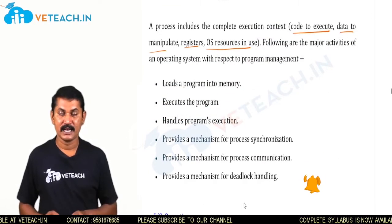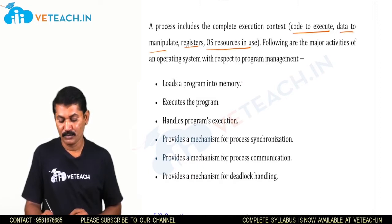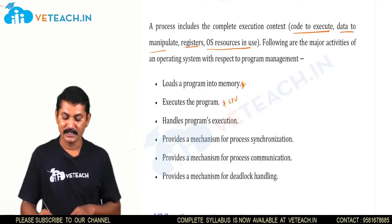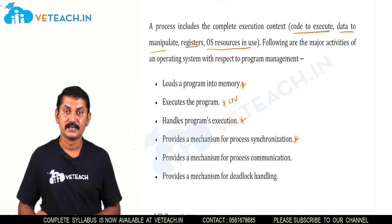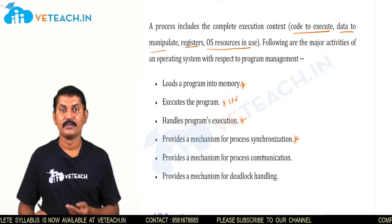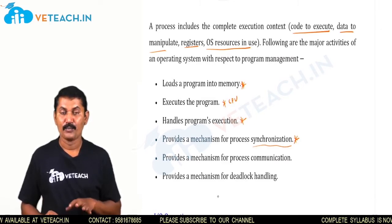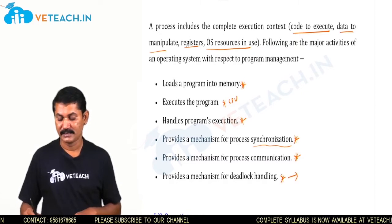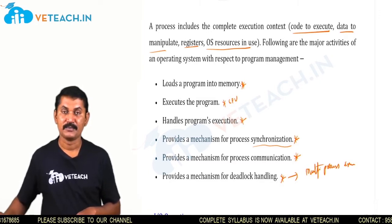The functionalities of process management include: loading the program into main memory, executing the program at the CPU, and handling program execution. It provides mechanisms for process synchronization — where programs need to communicate with each other — and for resource allocation. It also provides mechanisms for process communication with other processes, and for deadlock handling, which occurs in multiprocess or multiprogramming environments.